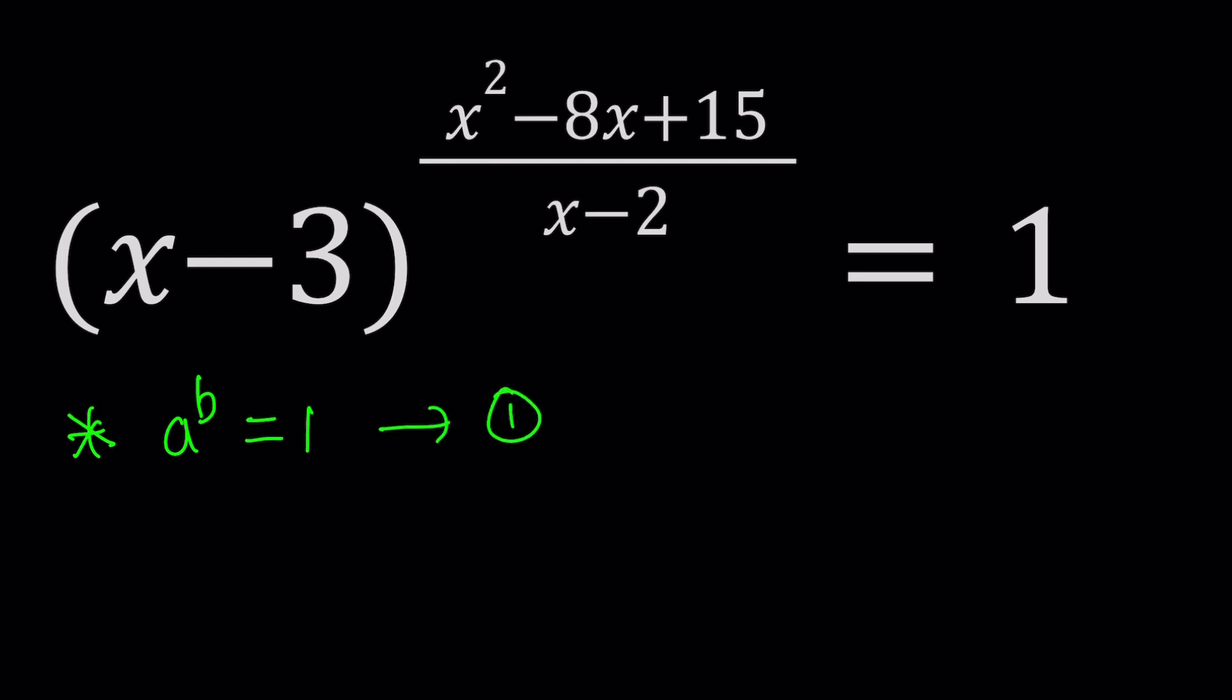First case, b can be 0 and a can also be 0 because 0 to the power 0 is equal to 1. If you don't believe that, go ahead and check out my video right here. I also share a link in the description. Now second case is where a is equal to 1 because 1 to any power is always 1. And in this case b can be any number so it doesn't matter.